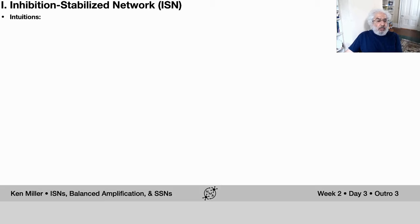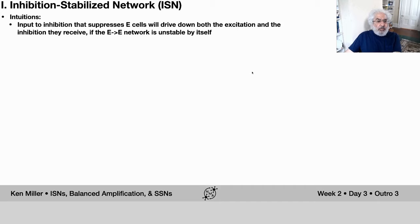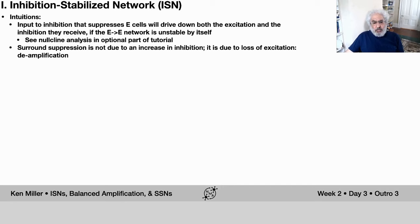The intuitions for the inhibition-stabilized network: input to inhibition that suppresses excitatory cells will drive down both the excitation and the inhibition those excitatory cells receive if and only if the excitatory-to-excitatory subnetwork is unstable by itself. You can see a null-cline analysis in the optional part of the tutorial. So surround suppression is not due to an increase in inhibition - it's a suppression but not by inhibition. It's due to loss of excitation, a deamplification: the response was being amplified by recurrent excitation, and that recurrent excitation is being withdrawn.